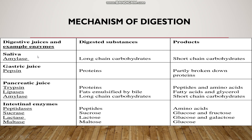Once carbohydrate digestion starts, the food then passes through the esophagus and reaches the stomach. The stomach has gastric glands and the gastric glands secrete gastric juice. The main constituents of the gastric juice are pepsinogen, hydrochloric acid, and mucus.